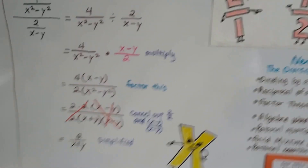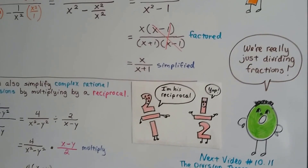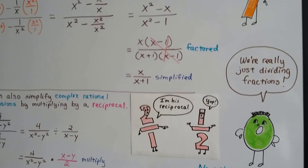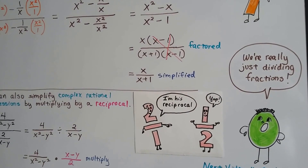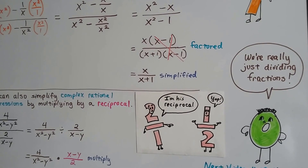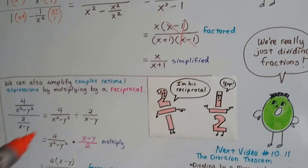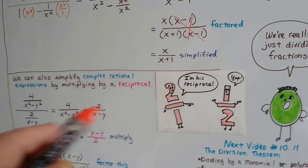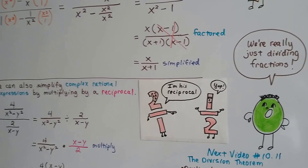So it's really no different than just dividing fractions. Like, if you wanted to divide 7 eighths by 1 half, we would turn it around and multiply by the reciprocal.